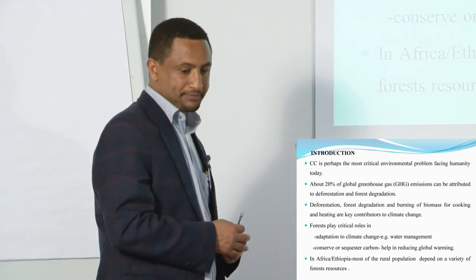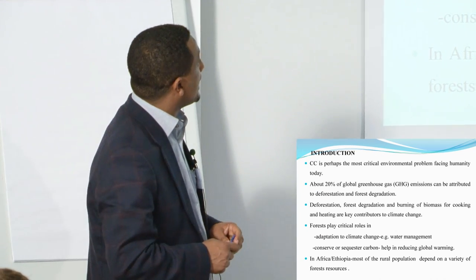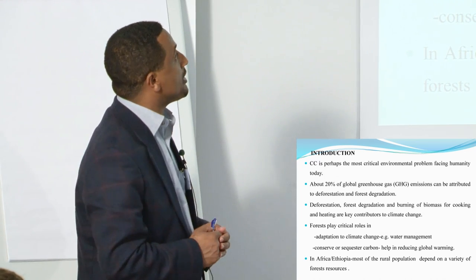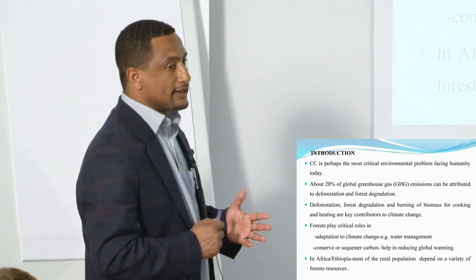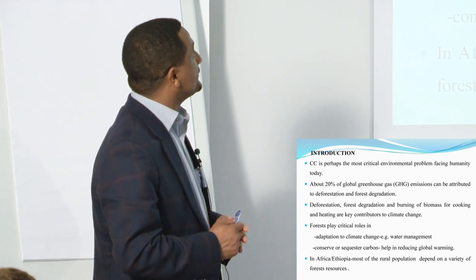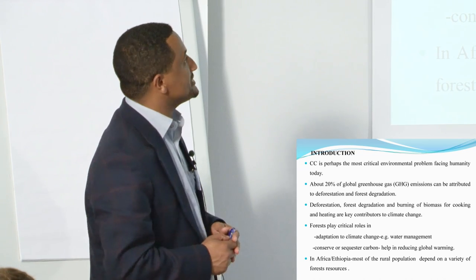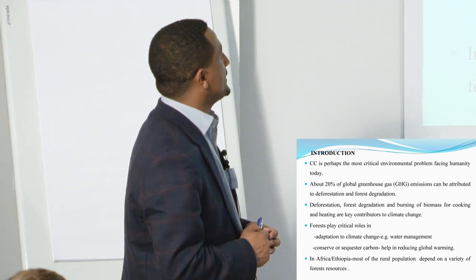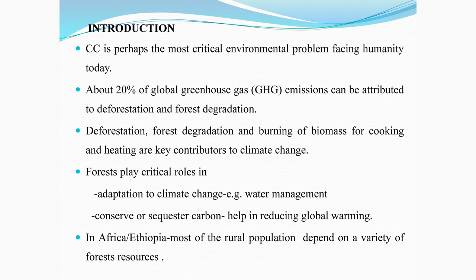To give you some background on climate change, this is for us the most serious environmental problem facing humanity today. Around 70 to 20 percent of global greenhouse gas emissions can be attributed to deforestation and forest degradation. This is due to deforestation and forest degradation for various purposes, and burning of biomass for cooking and heating — these are the key contributors to climate change.